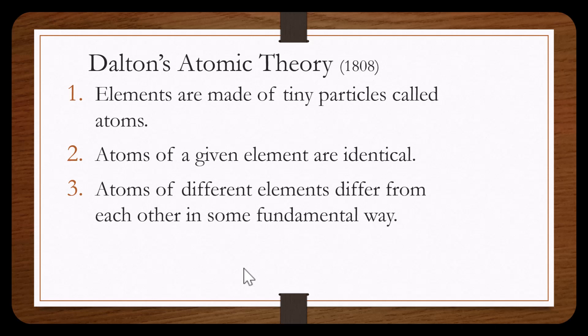The following is Dalton's atomic theory of 1808. 1. Elements are made of tiny particles called atoms. 2. Atoms of a given element are identical. 3. Atoms of different elements differ from each other in some fundamental way.